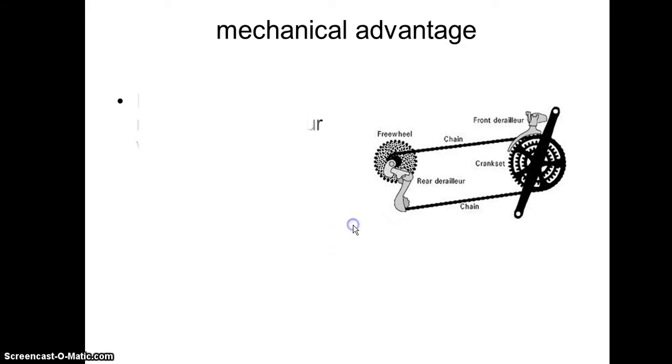Mechanical advantage is how simple machines make your work easier. This is an example of a simple machine—this is really a wheel and axle. It's a version of a gear.